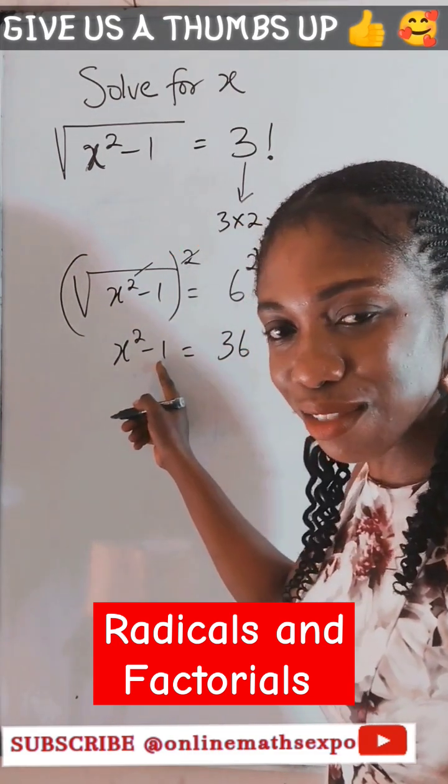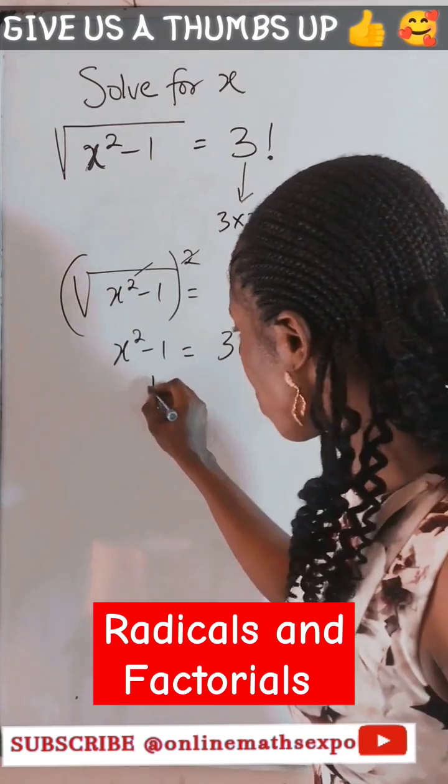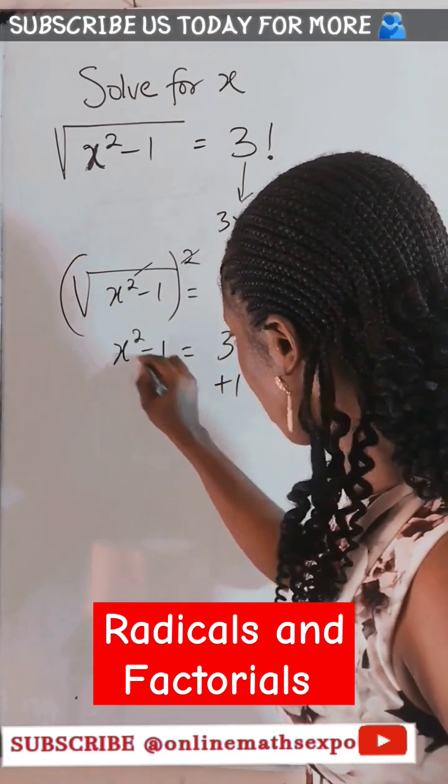So we are going to have—remember to remove this negative 1, use its inverse which is positive 1, add to both sides. This will cancel.